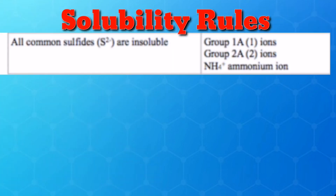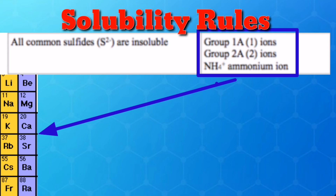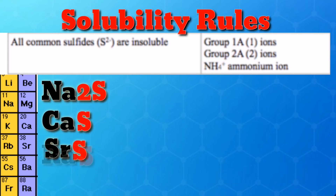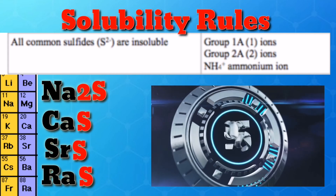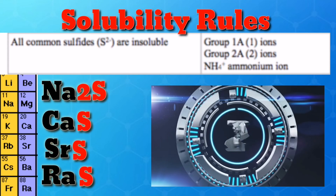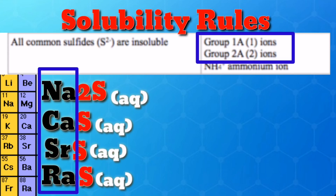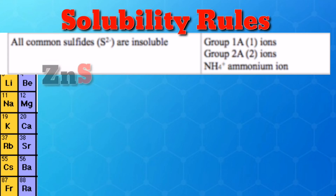Rule 11: Most sulfides of transition metals are highly insoluble, except for elements in Groups 1A, 2A, and the ammonium ion. Examples: sodium sulfide, calcium sulfide, strontium sulfide, and radium sulfide — all are soluble because they belong to Groups 1A and 2A, making them exempt from the insolubility rule for sulfides.